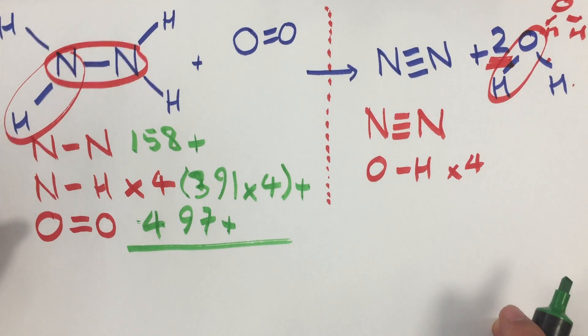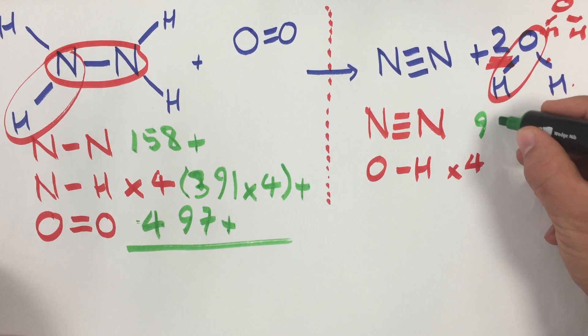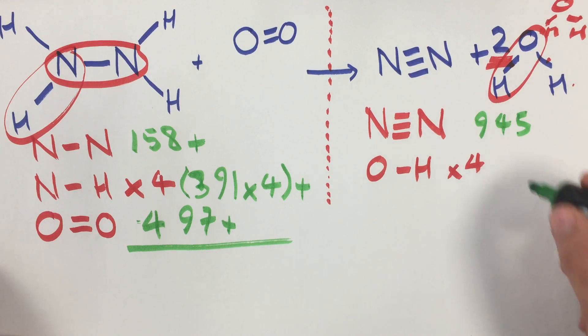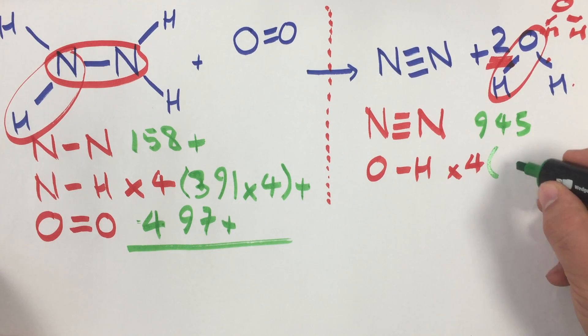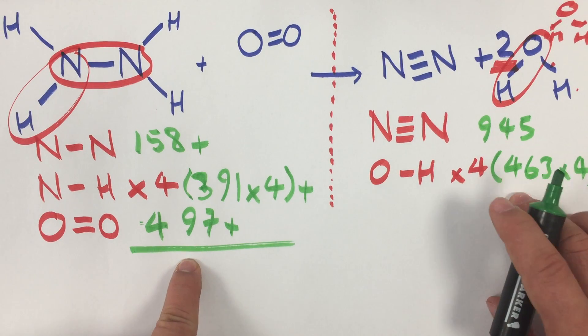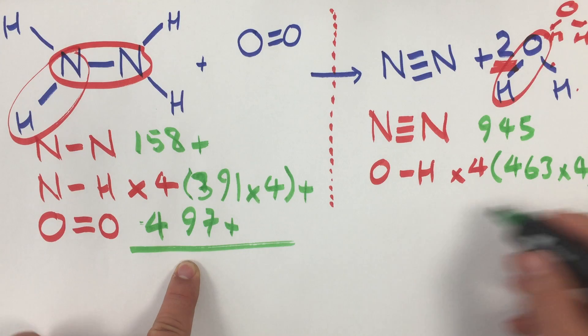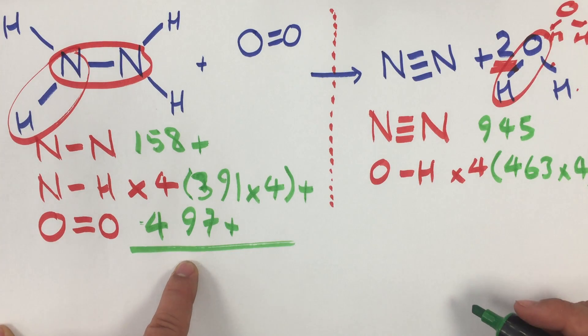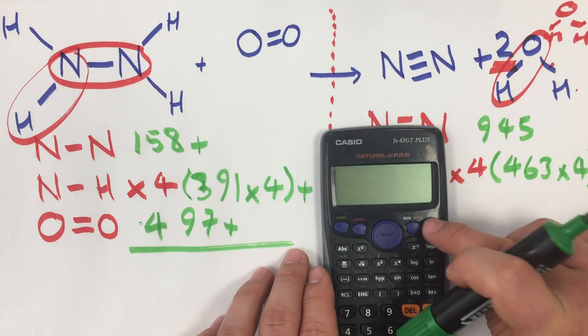And I also have to do this on the other side. So a nitrogen triple bond is 945, so I've told you that was going to be a very strong bond. And then you have an oxygen-hydrogen bond which is 463 times four. Now if at this point you're thinking where have these numbers appeared from, remember I'm taking these from a table. So in your exam you get given these numbers. You get given what is the energy of each bond. All you have to do is work out which ones you've got more than one of, so you need to times by four.